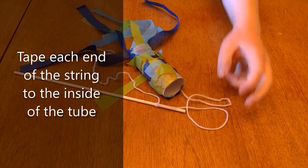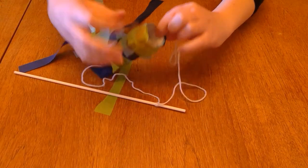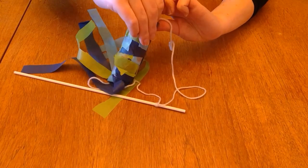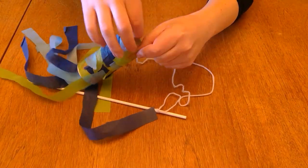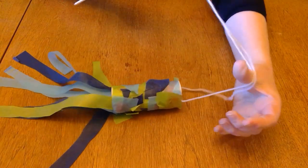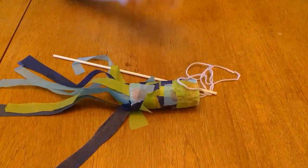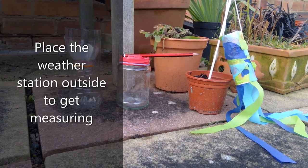Now all you need to do is take the end of each piece of string to the inside of the tube facing opposite each other. Now you can put this outside with your rain gauge and barometer and start having a look at what's going on with the weather outside and get measuring.